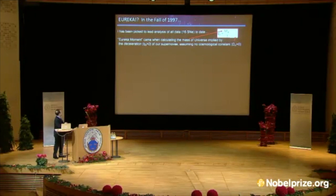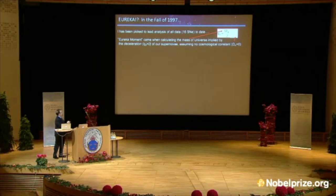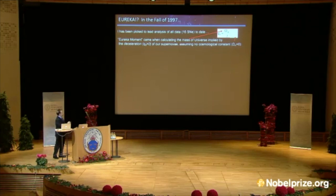By 1997, and by the fall in particular, I had been picked by our team to analyze our first really large sample of supernovae, about 16. Having done all the steps in the analysis, came the moment of truth where the deceleration rate, which we write in the variable Q0, set by the supernovae would imply how much mass was in the universe. If it was decelerating a lot, if this was a big number, then the mass of the universe would be a big number, and the universe would re-collapse.